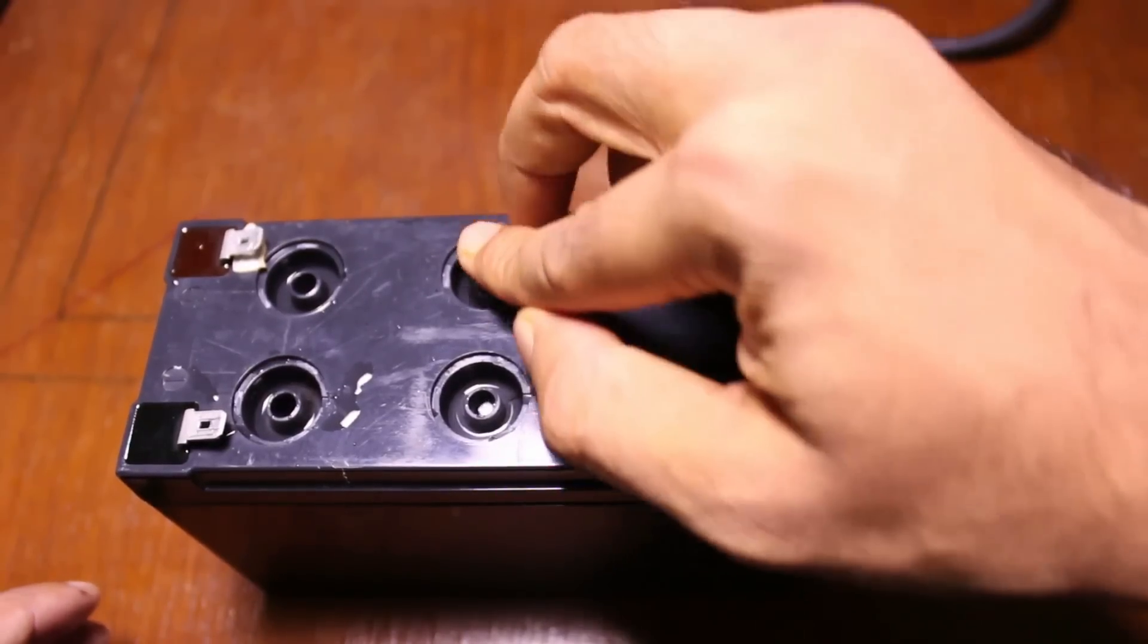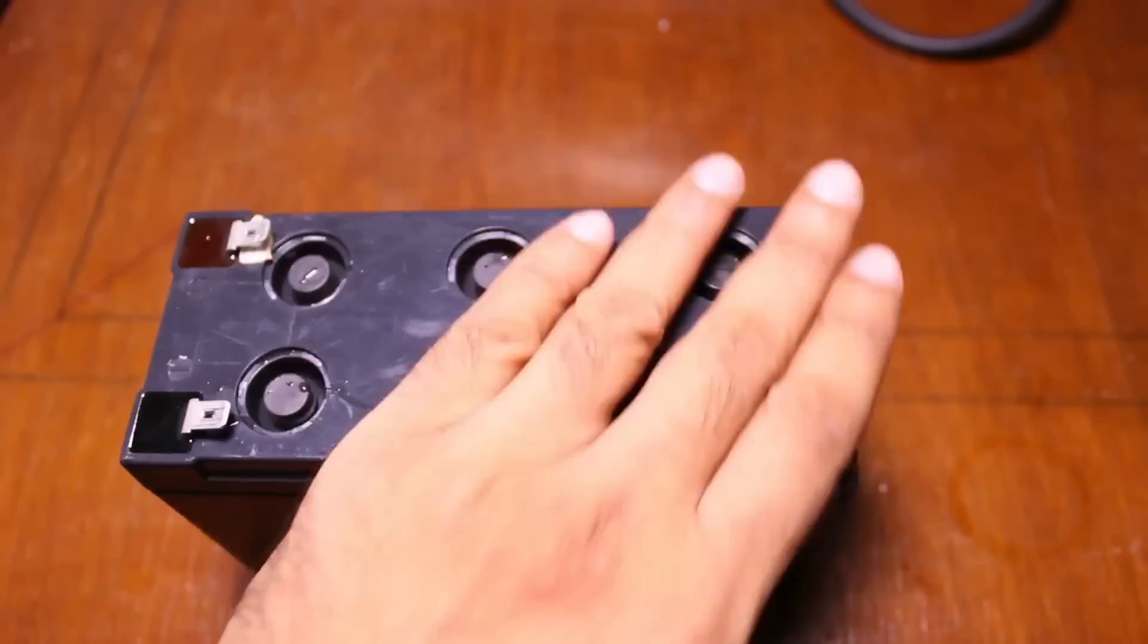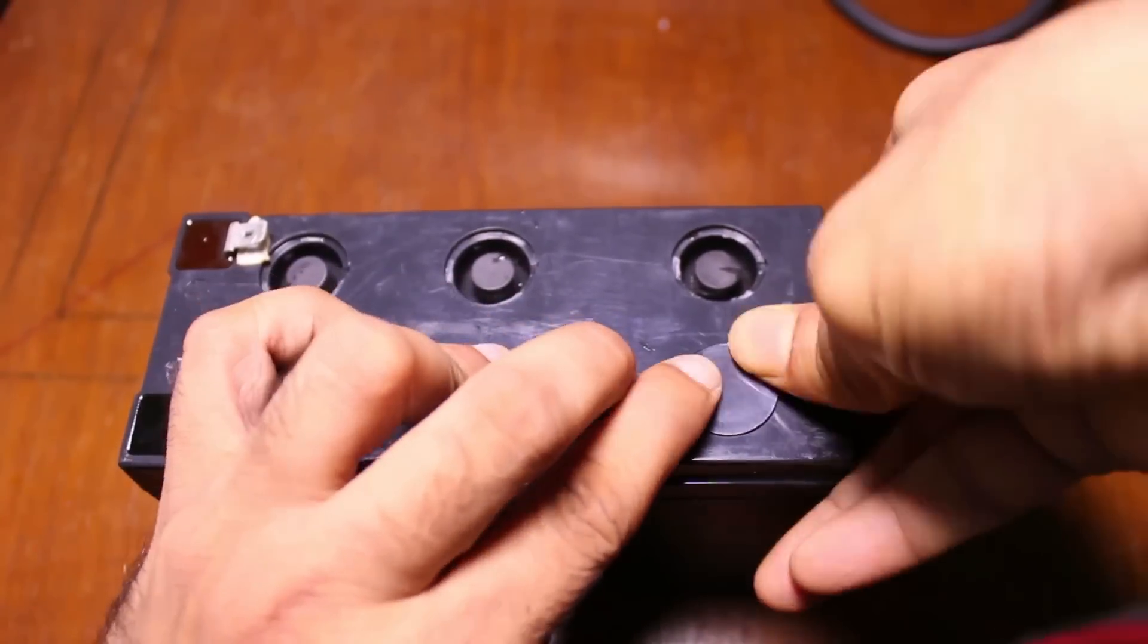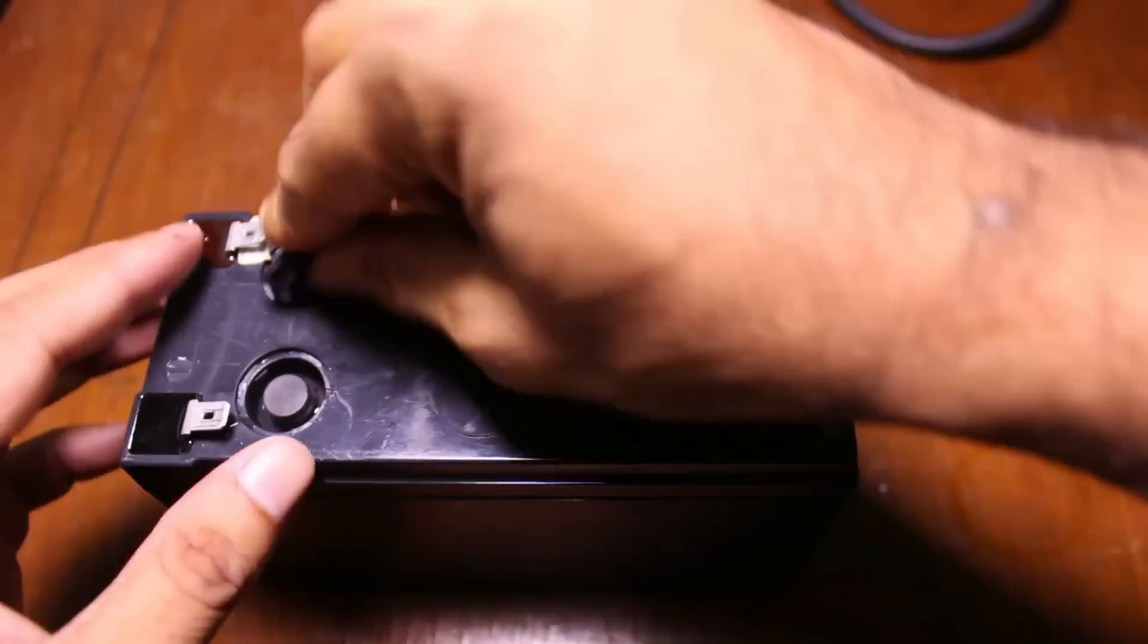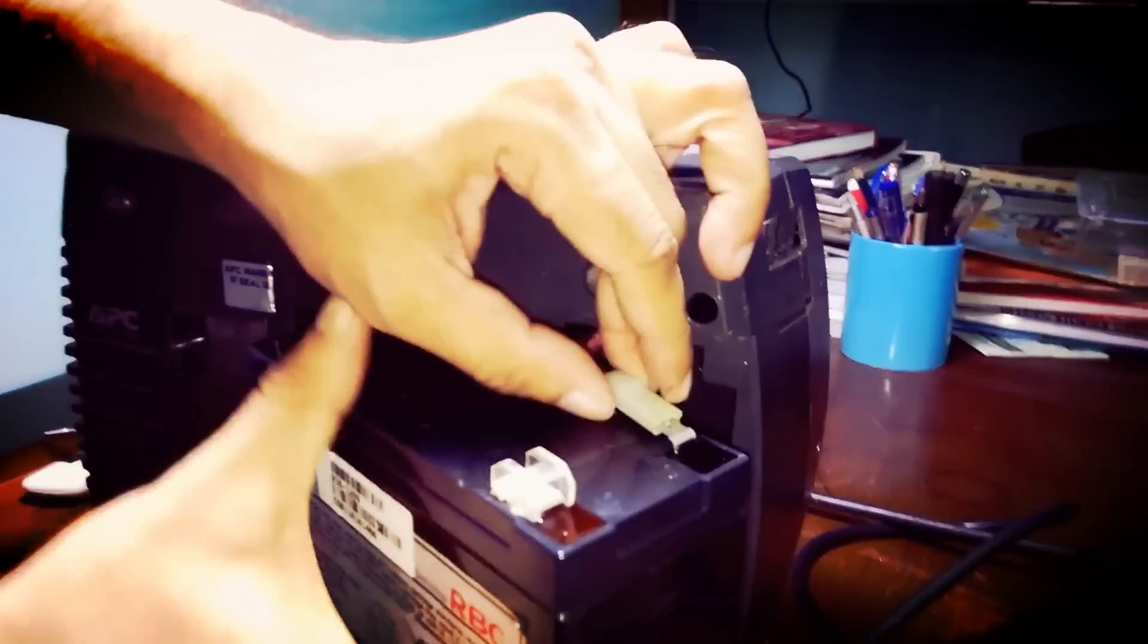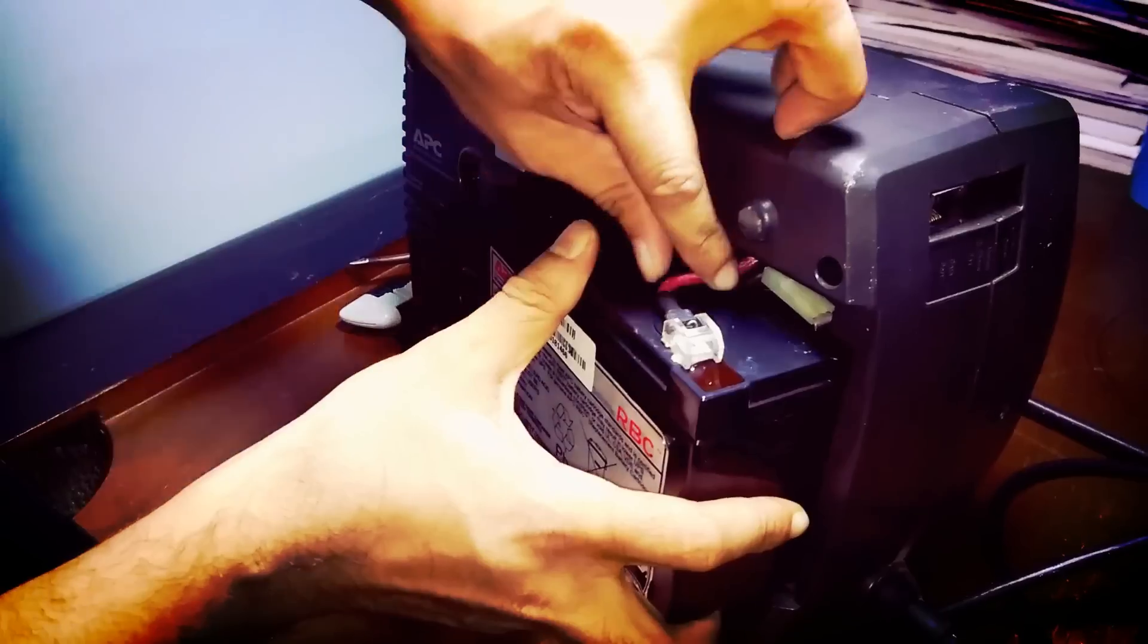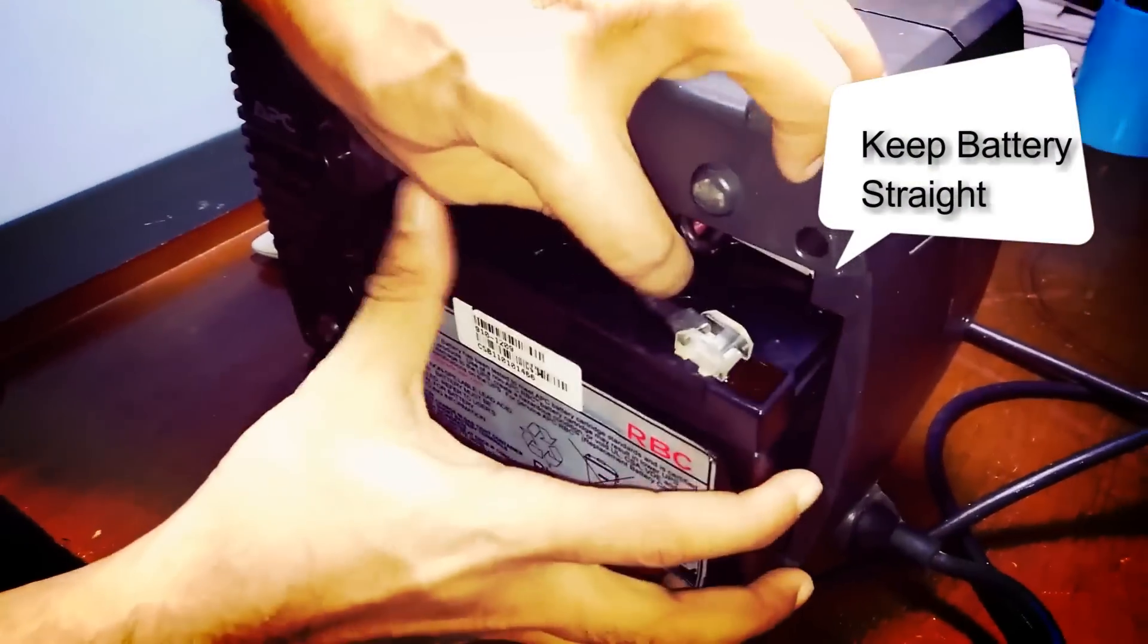After filling up the water, close the cap of every cell. Now install the battery inside the UPS and make sure the battery lies straight and do not tilt the battery on any side, left or right. It might spill some acid on your hand or inside the UPS and that will be dangerous and it might kill your UPS. So make sure the battery is straight.